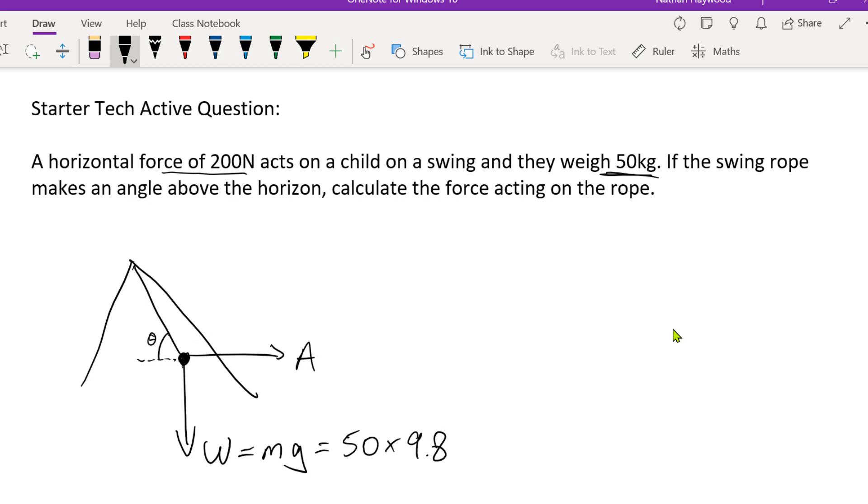So you could label it, I don't know, applied force 200 Newtons in the positive i direction. So we're trying to figure out what is the force acting on this rope - T for tension or R for rope, whatever you want to call it.